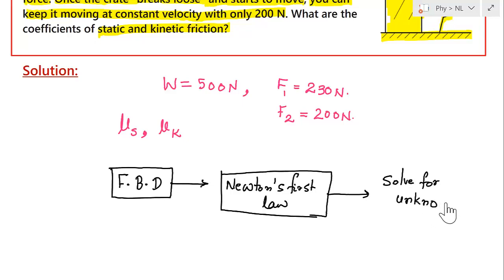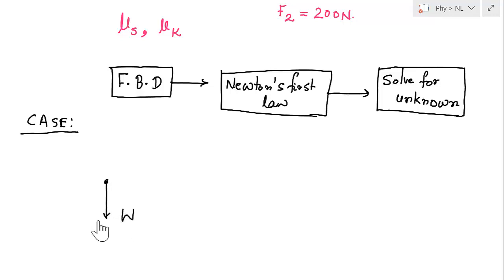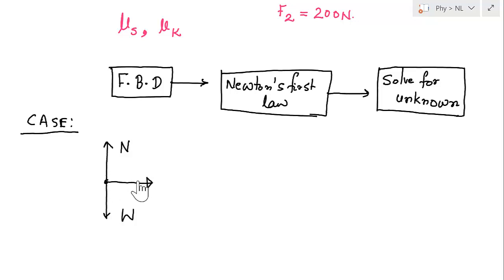We will consider two cases. Case 1: the crate is at rest. What are the forces acting on the crate? Treating the crate as a point mass, one force acts in the downward direction — that is the weight of the crate, 500 Newton. The floor applies a vertical force upward — that is the normal reaction. A person is applying a horizontal force F1, which is 230 Newton.